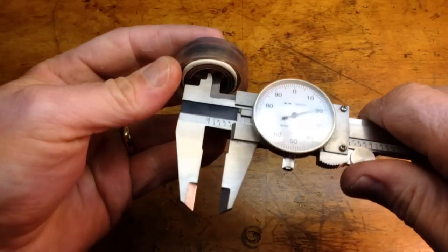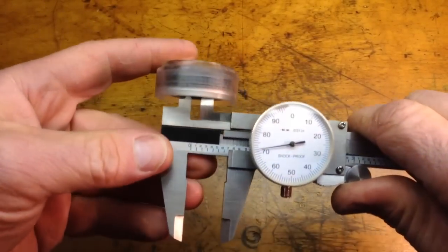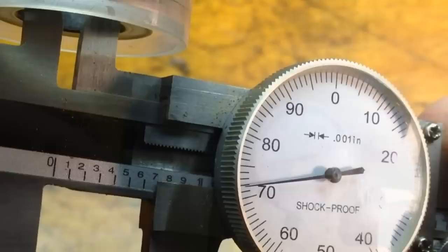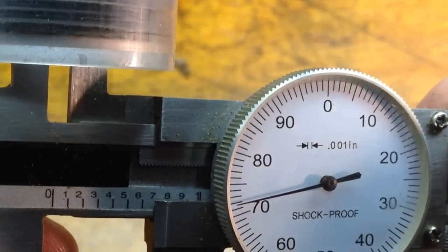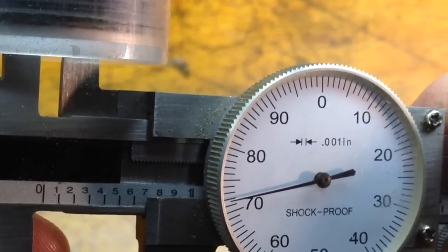Now we're going to measure the interior of the bearing, and we do it the same way as the vernier, and you can see it's right at the 6, and it looks like .672 is our measurement.